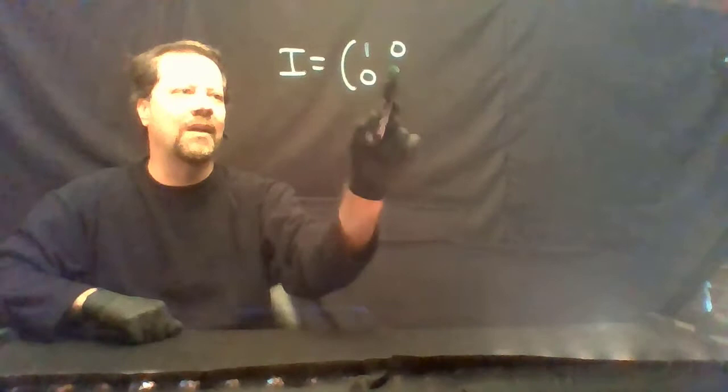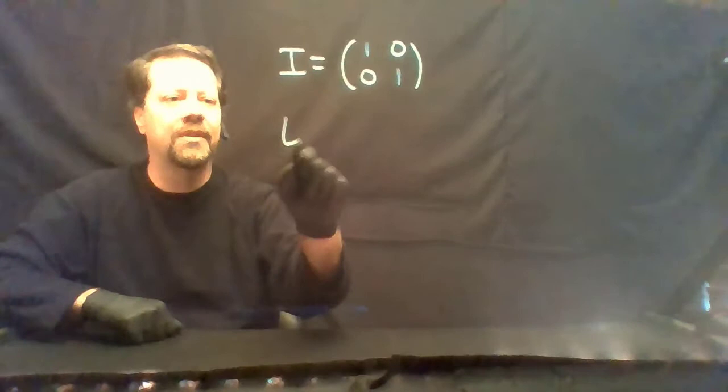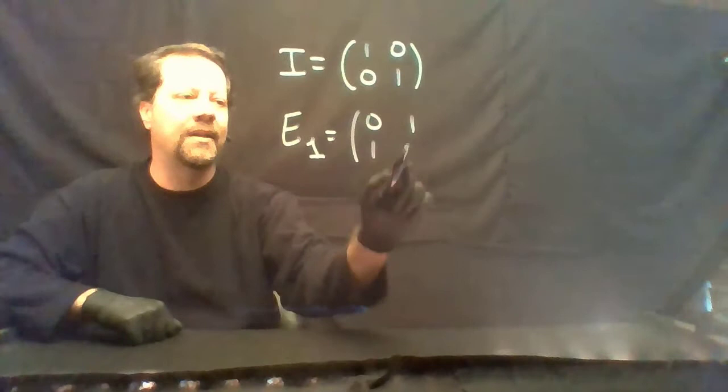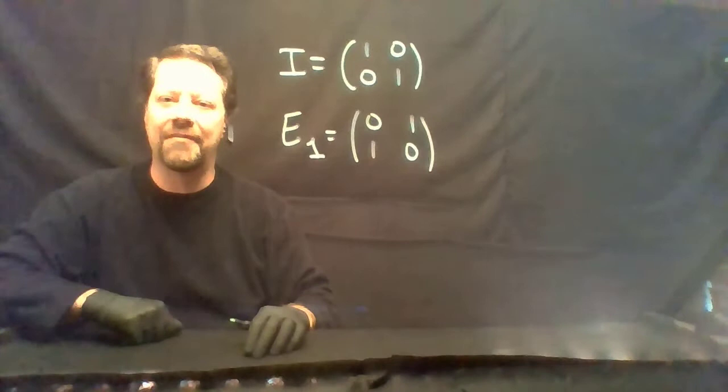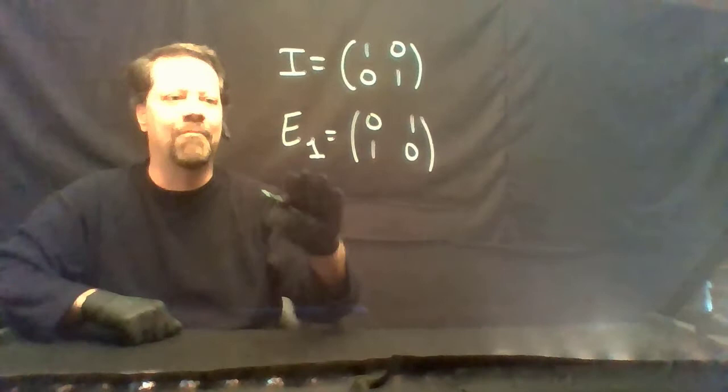Suppose I perform one elementary row operation on the identity matrix. Let's start with the identity matrix: 1 0 / 0 1. The first kind of elementary row operation is to interchange rows. Let's consider E1 to be 0 1 / 1 0, the matrix obtained by reversing the rows of the identity matrix.